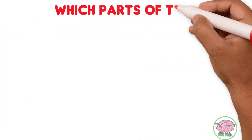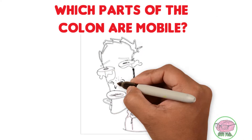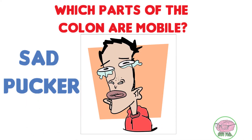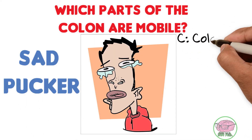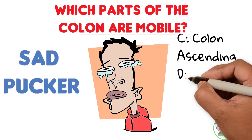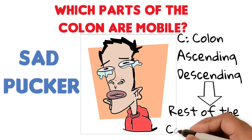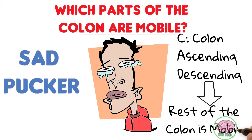For this to happen, the affected segment of the colon must be mobile. Recalling the mnemonic 'sandpoker,' the C stands for colon — both ascending and descending colon are retroperitoneal structures covered by parietal peritoneum and therefore not mobile, meaning the rest of the colon segments are mobile.